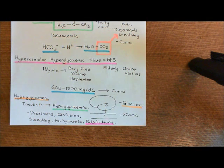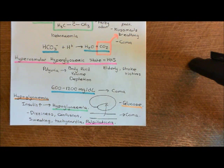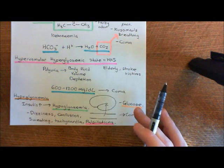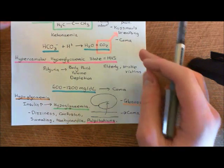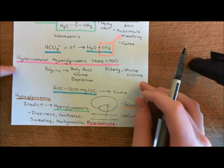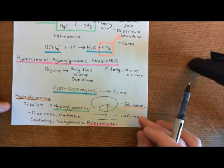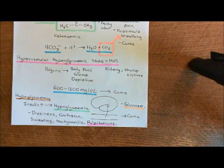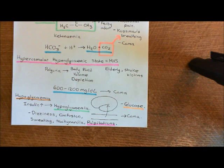That's enough of the acute complications. We're now going to move on to the chronic complications of diabetes. The acute complications are short-term events that can happen if things go horribly wrong — such as forgetting to take your insulin, not drinking enough, or injecting too much insulin. The chronic complications, however, are what occurs long-term if you have persistently high fasting blood glucose concentration.